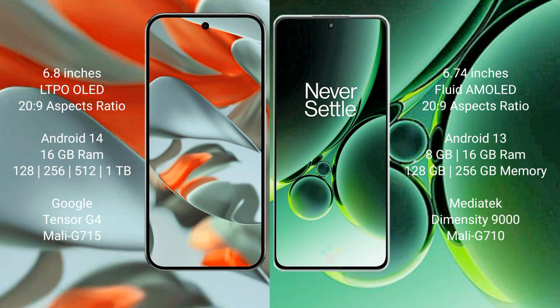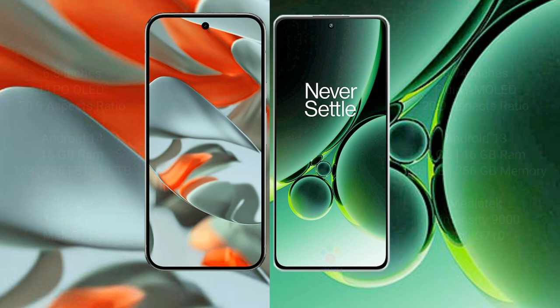Google Pixel 9 Pro XL comes with 16GB RAM, 128GB, 256GB, 512GB, and 1TB internal storage options, powered by the Google Tensor G4 processor and GPU Mali-G715. OnePlus Nord 3 comes with 8GB and 16GB RAM, 128GB and 256GB internal storage options, powered by the MediaTek Dimensity 9000 processor and GPU Mali-G710.